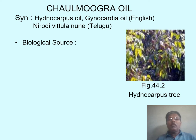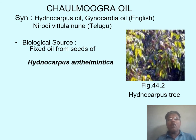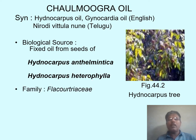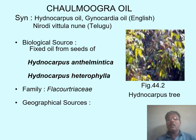This oil is an organized type of drug and has a biological source — it is a fixed oil obtained from the seeds by expression of Hydnocarpus anthelmintica, which belongs to family Flacourtiaceae. Another species is Hydnocarpus heterophylla. Both species are official as per IP.